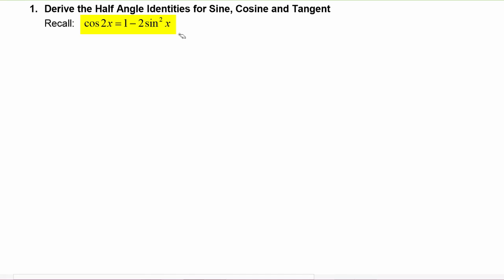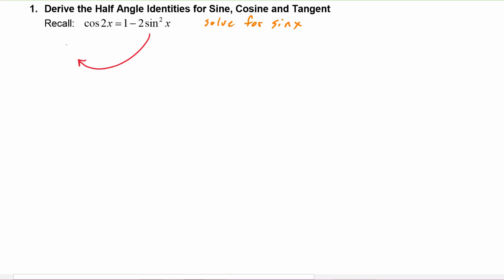We are going to solve this for sine of x. I like to have my variables be positive, so I'm going to take the negative two sine squared of x and bring it over to the left hand side so that it becomes positive two sine squared x. The one will stay there, and we're going to bring the cosine of two x over to the right hand side so it will become minus cosine two x.